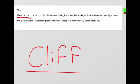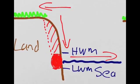Wave cut notch: A section of a cliff between the high and low tide marks which has been removed by erosion. This is our wave cut notch.